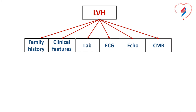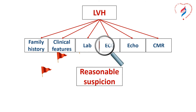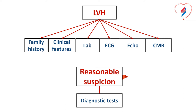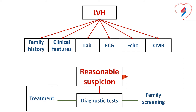A document elaborated by the working group on myocardial and pericardial diseases of the European Society of Cardiology discusses the diagnostic workup in cardiomyopathy and proposes using a red flags approach — meaning that when you have a patient with left ventricular hypertrophy, you look at everything from family history to clinical features, lab tests, electrocardiogram, echocardiography, and cardiac MRI to raise a reasonable suspicion on which to base further diagnostic tests. This will help choose treatment and guide family screening.